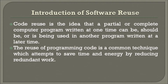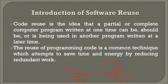Code reuse is the idea that a partial or complete computer program written at one time can be, should be, or is being used in another program written at a later time. Say at time t1 some program P1 is written, and at time t2 some program P2 is written — P1 may be utilized for forming P2. This is what is meant here.